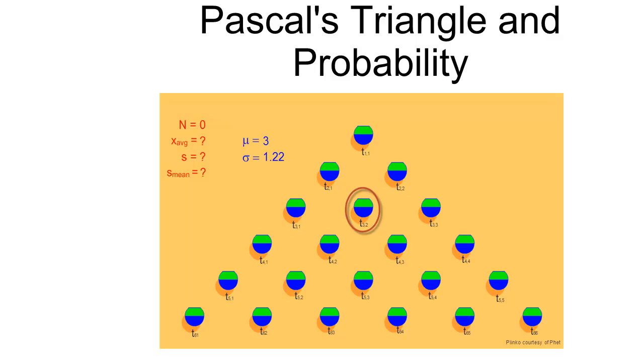We've been looking at Pascal's triangle as a way of keeping track of pathways and counting all of the combinations that get us to the same location. We can similarly use Pascal's triangle to help us calculate probabilities.